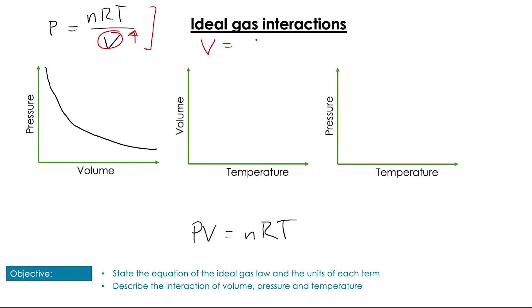We can try the same when we look at how volume is affected by temperature. Looking at volume, we can see that temperature is on the top of the fraction. So as we increase temperature, we're going to increase that overall term, and so we get a linear relationship between volume and temperature.